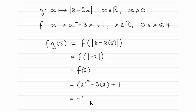So just taking you through this, fg of 5, we put 5 through g first of all so we've got the mod of 8 minus 2 times 5, in other words the mod of 8 minus 10 which is the mod of minus 2. The mod of a negative number remember just returns the positive equivalent.